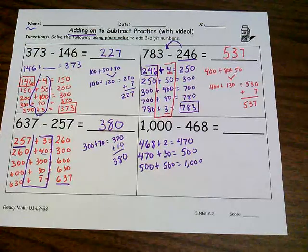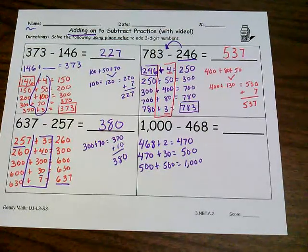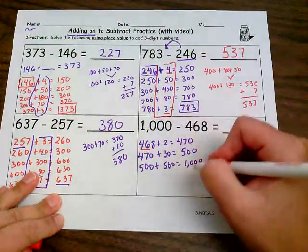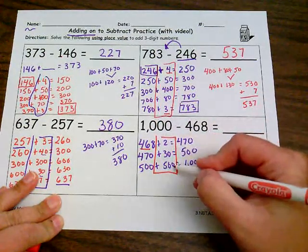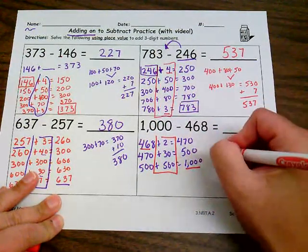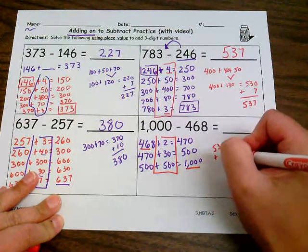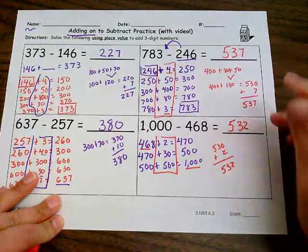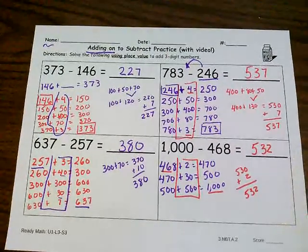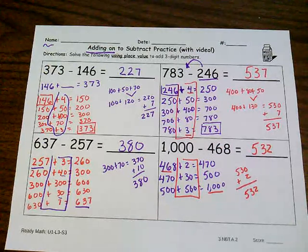That's perfect. Alright. So now I've got my start number, my end number, and now I'm going to add this all up. 500 plus 30 is 530 plus just two more is 532. Alright. So take a minute to look over your work. Think about how you did.